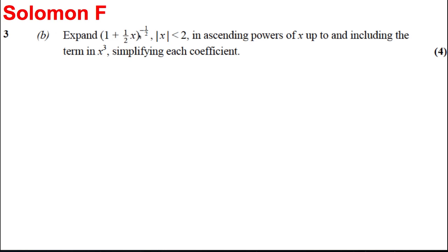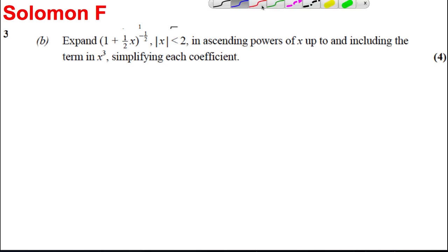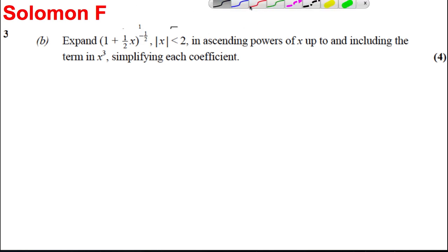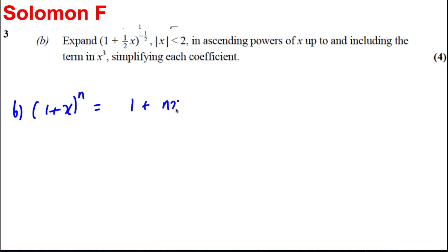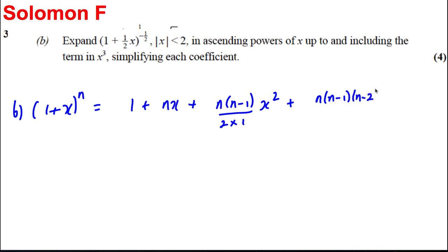Next part: expand (1 + ½x) to the negative one half in ascending powers of x. I'm going to write down the binomial theorem as I always do. Part B: (1 + x)^n equals 1 + nx + n(n−1)/2 · x² + n(n−1)(n−2)/(3·2·1) · x³ + ...